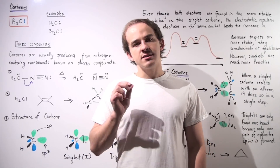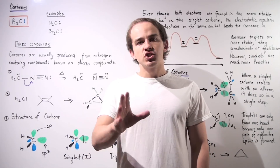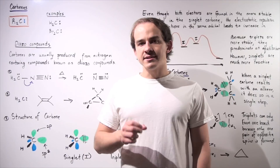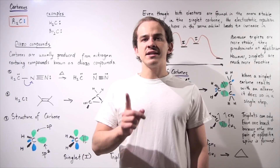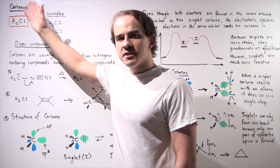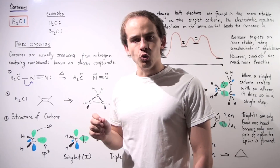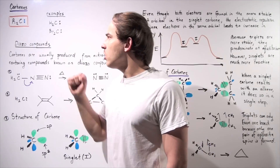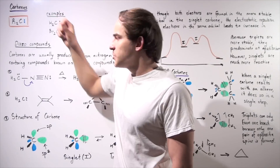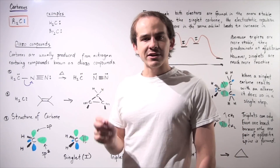In this lecture, we're going to discuss carbene chemistry. So what exactly is a carbene? A carbene is a compound with the following molecular formula: a central carbon attached to two R groups. These R groups could be any groups, and the carbon also contains a lone pair of electrons.